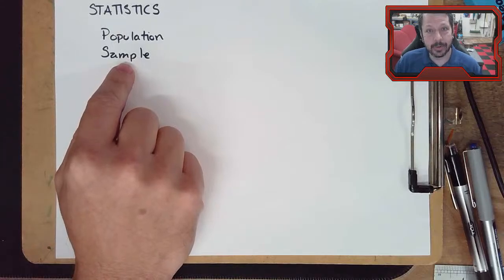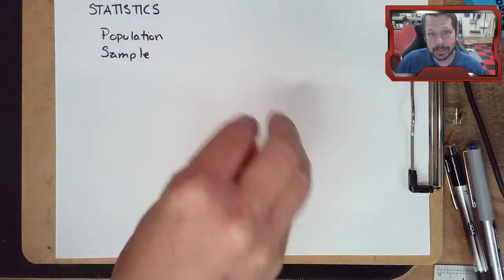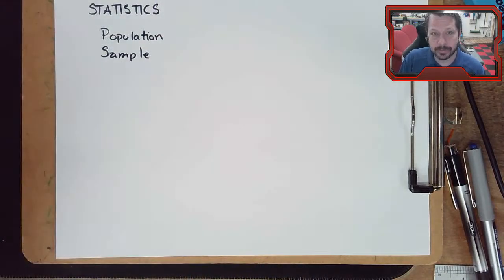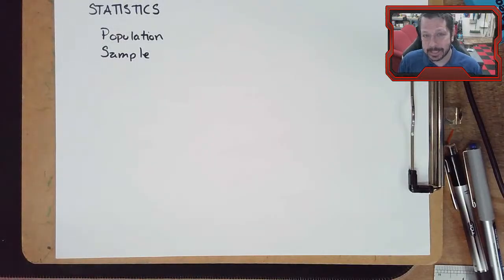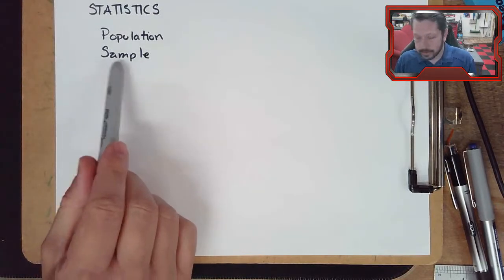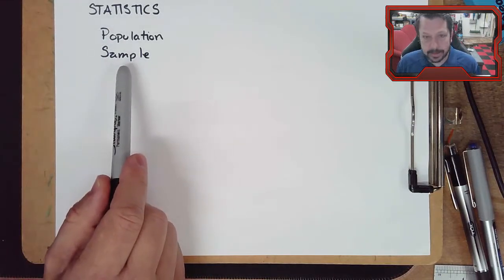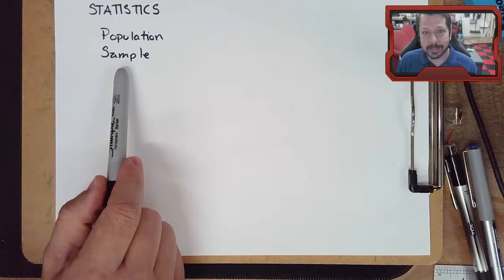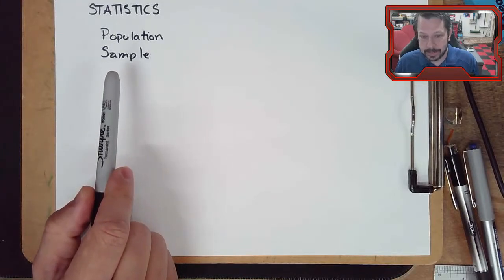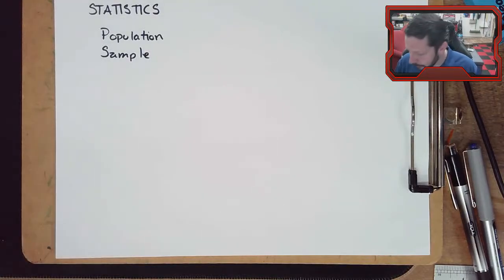You might intentionally bias a sample to compare one subset against another, but if you want a representative sample of the entire population, you have to be careful. With upcoming polls in the news, consider whether those polls are being biased one way or another. Samples and how they're constructed are very important.